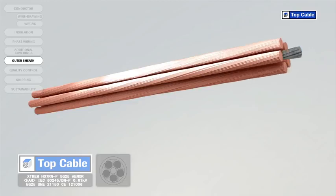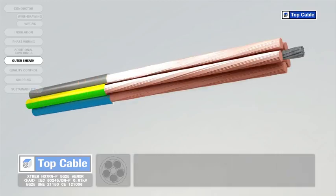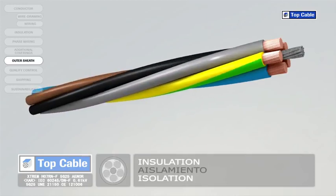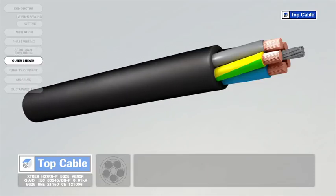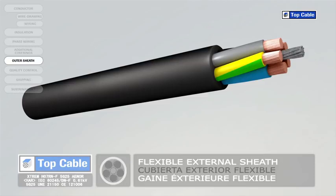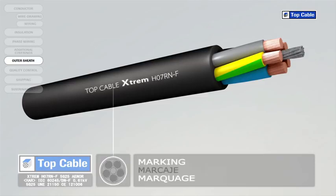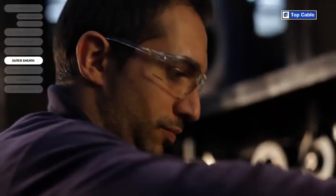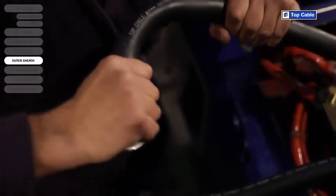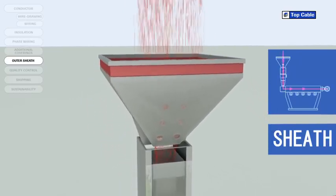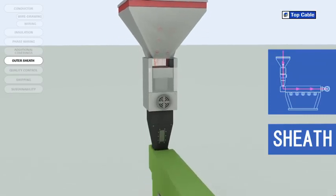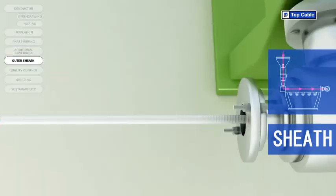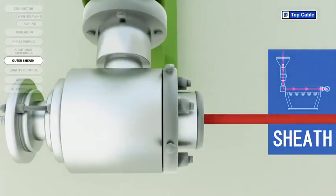Cables usually have an outer polymer covering for protection, called the outer sheath. The sheath protects the conductors and their insulation from external elements which may change their electrical properties, such as moisture. It also protects them from mechanical aggression during installation. As with the insulation, the outer sheath can be made from a thermoplastic or a thermosetting plastic, applied via extrusion at high temperature. The sheath material varies depending on the required protection level, the final flexibility of the cable, the work environment, etc.